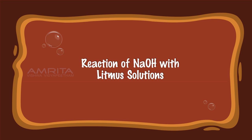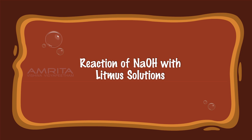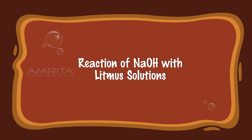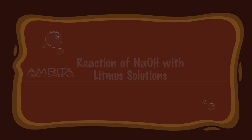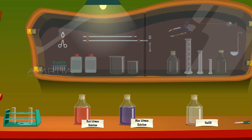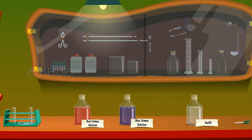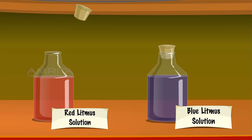Reaction of NaOH with Litmus Solutions. We require two test tubes placed in a test tube rack, red and blue litmus solutions, NaOH solution, and a dropper.